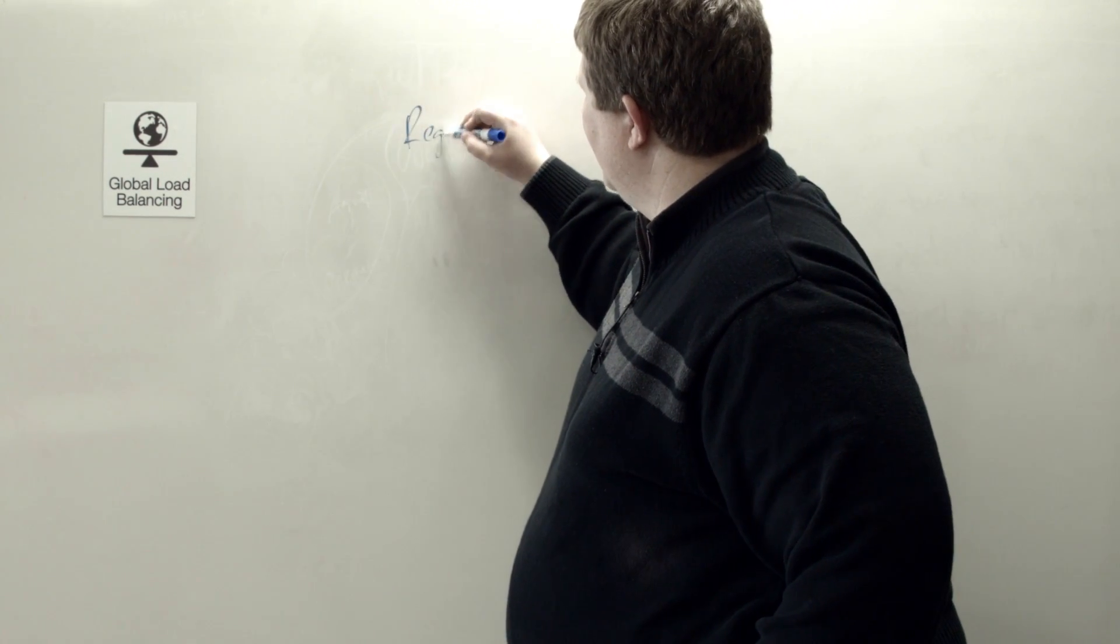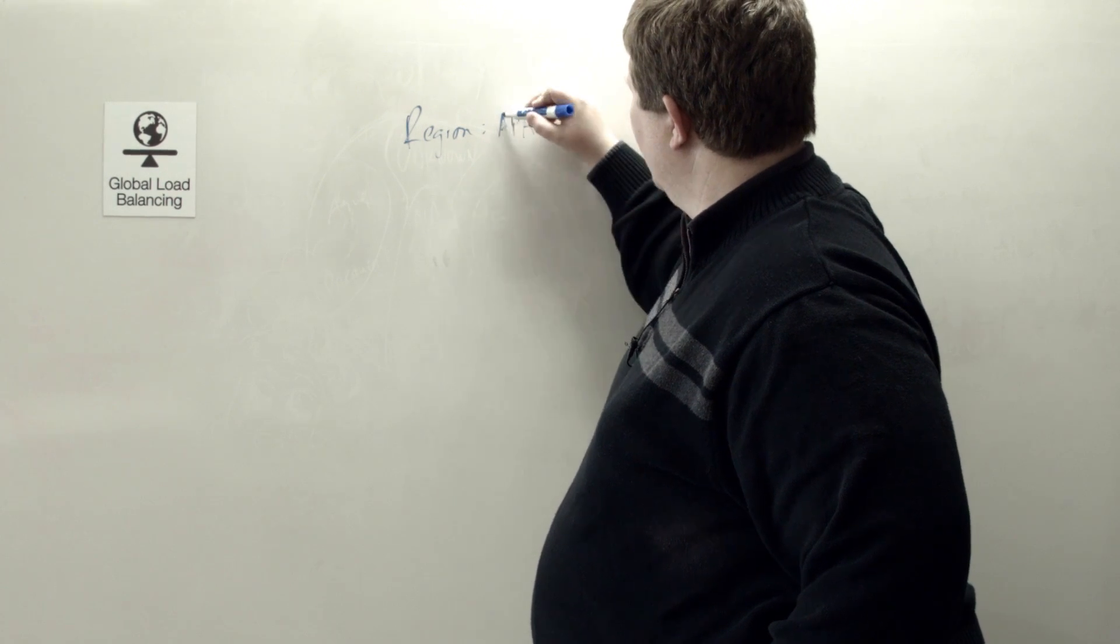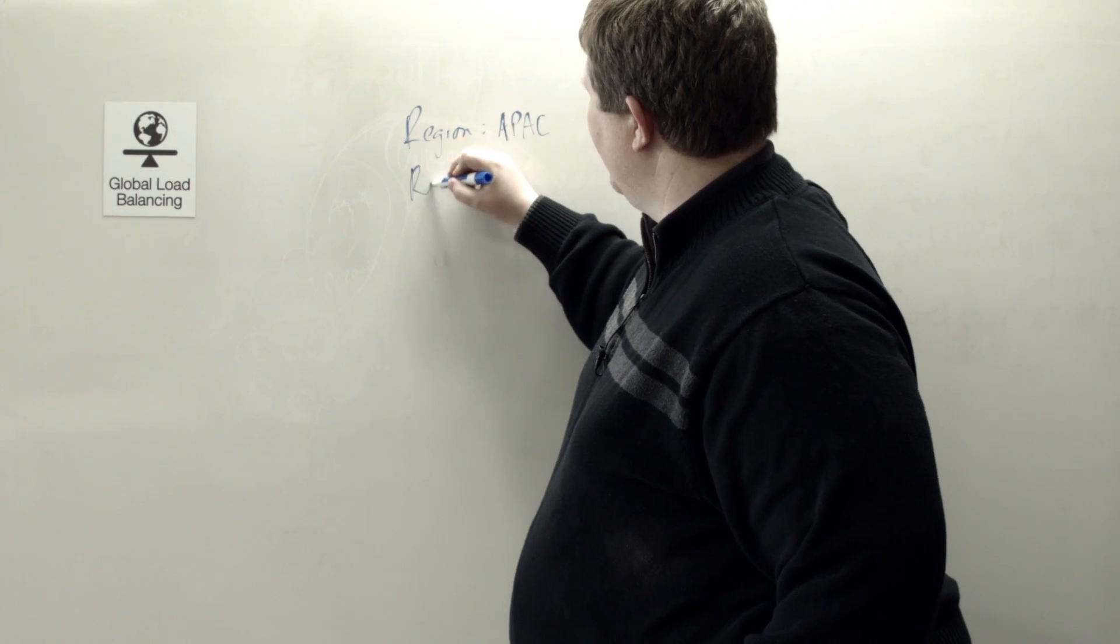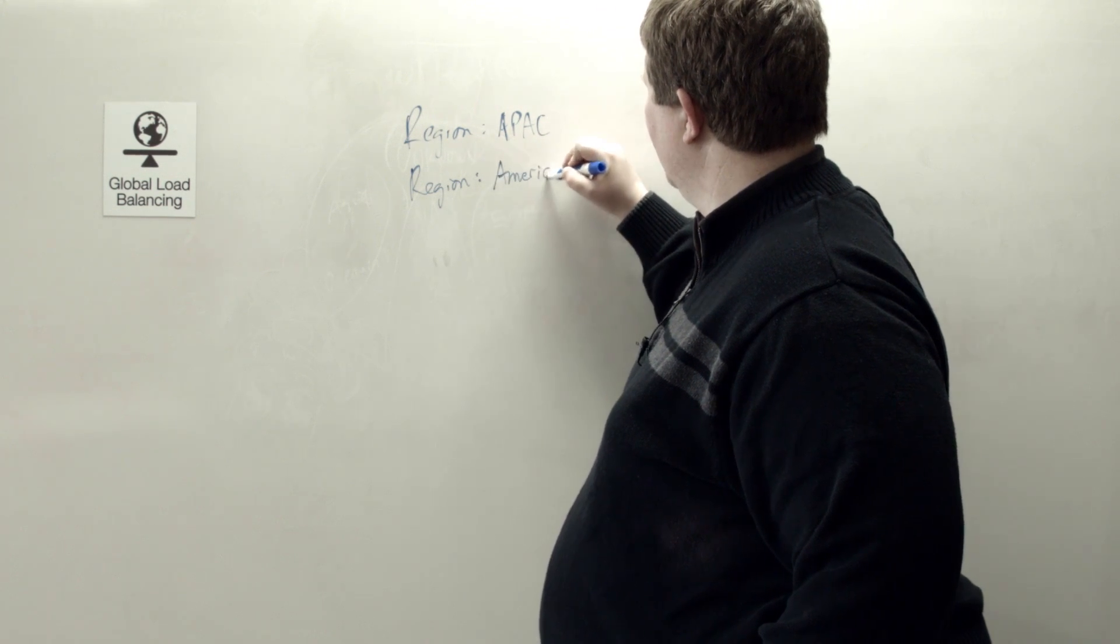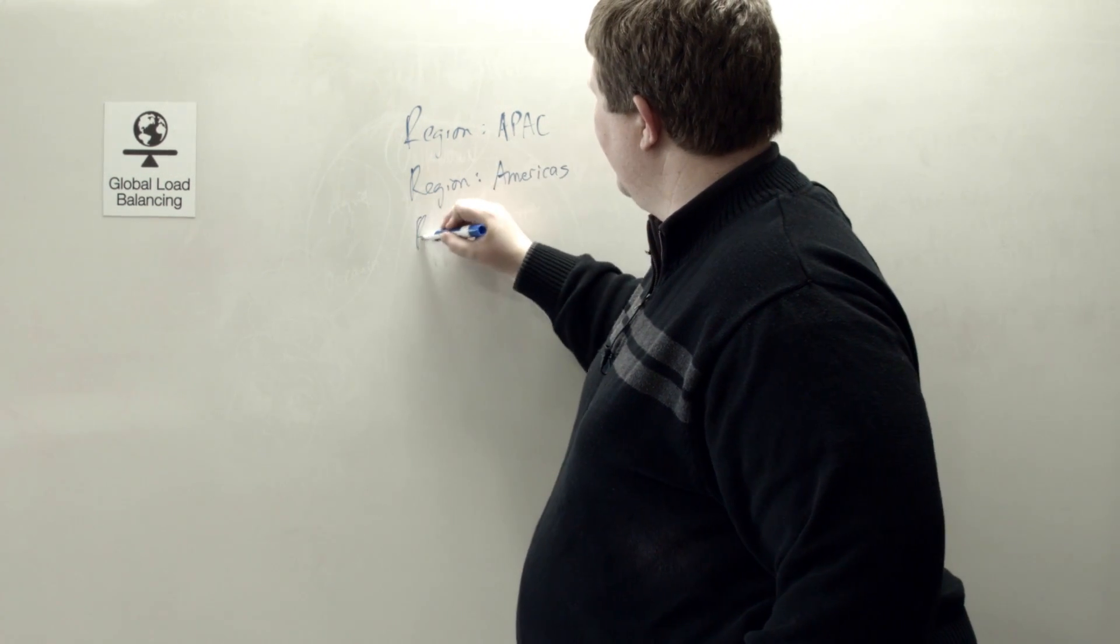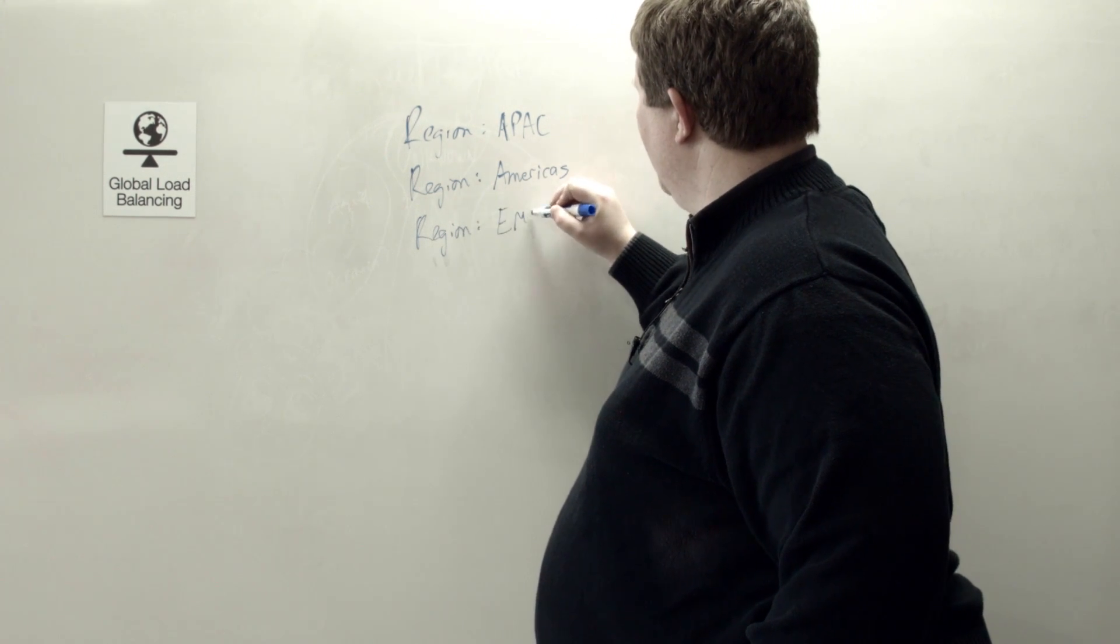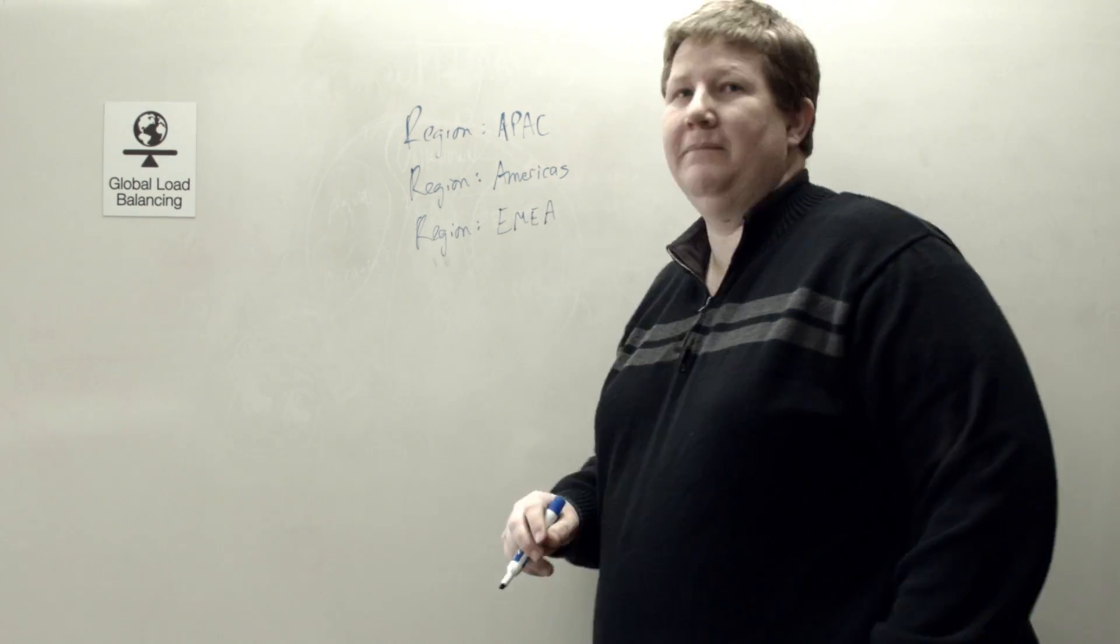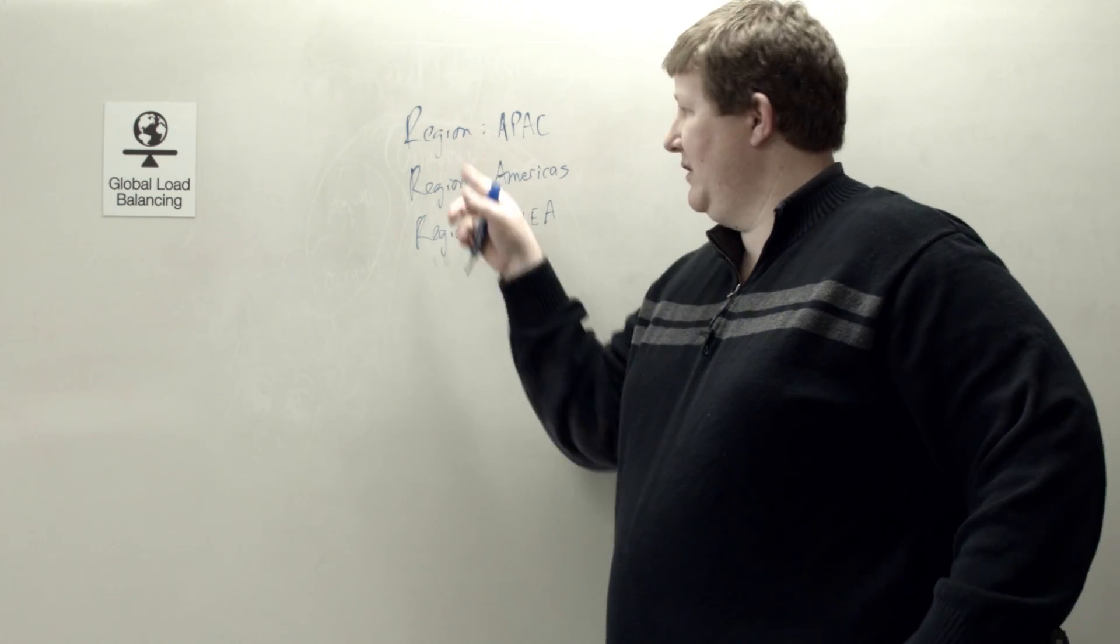One region I'll say is Asia Pacific. Another region is the Americas. And then another region is Europe, Middle East and Africa. So we have EMEA. So basically we grouped all of those continents into these three regions.